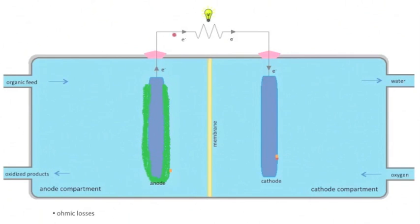The ohmic losses are found in the electrical wire and in the proton transfer from the anode to the cathode. Concentration losses occur when the rate of mass transfer to either the anode or cathode compartment limits the rate of product formation.